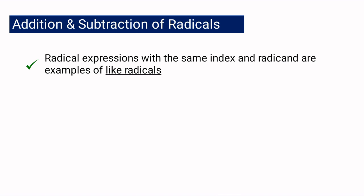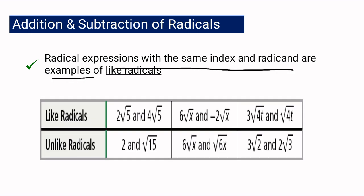Radical expressions can be added or subtracted if and only if they are like radicals. So the question is, when do we say that radical expressions are like radicals? Radical expressions with the same index and radicand are examples of like radicals. You are going to notice that in each pair, you have the same index and the same radicand.